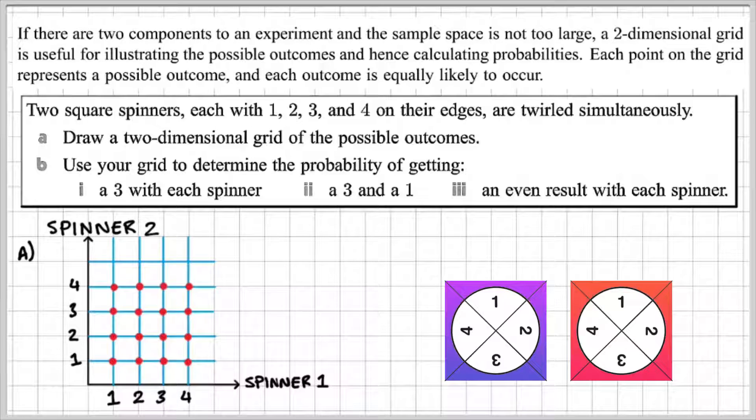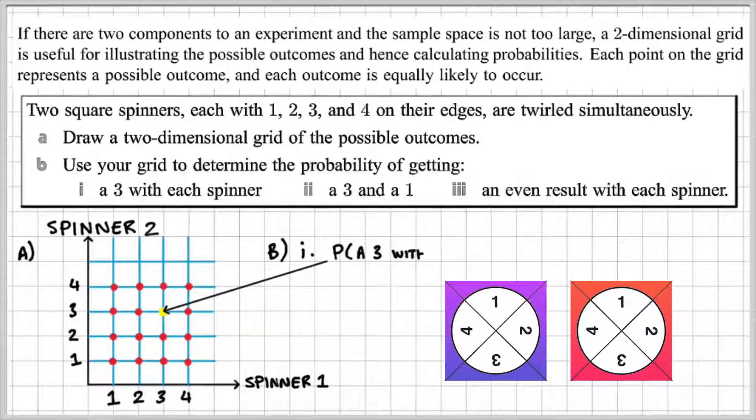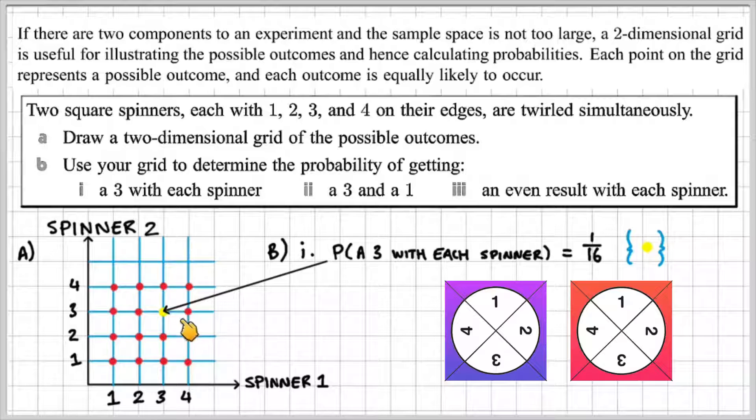So in part i) we're going to determine the probability of getting a 3 with each spinner. So Spinner 1 and Spinner 2 each get a 3, which is that point there. So the probability of a 3 with each spinner is 1 out of 16, indicated by the yellow dot on our grid.